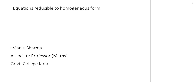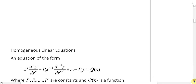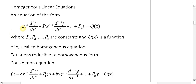Good morning. Today our topic is equations reducible to homogeneous form. In the last lecture, we studied homogeneous equations. An equation x^n (d^n y/dx^n) + p1 x^(n-1) (d^(n-1)y/dx^(n-1)) + ... + p_n y = Q(x), where p1, p2, ..., p_n are constants and Q(x) is a function of x, is called a homogeneous equation.